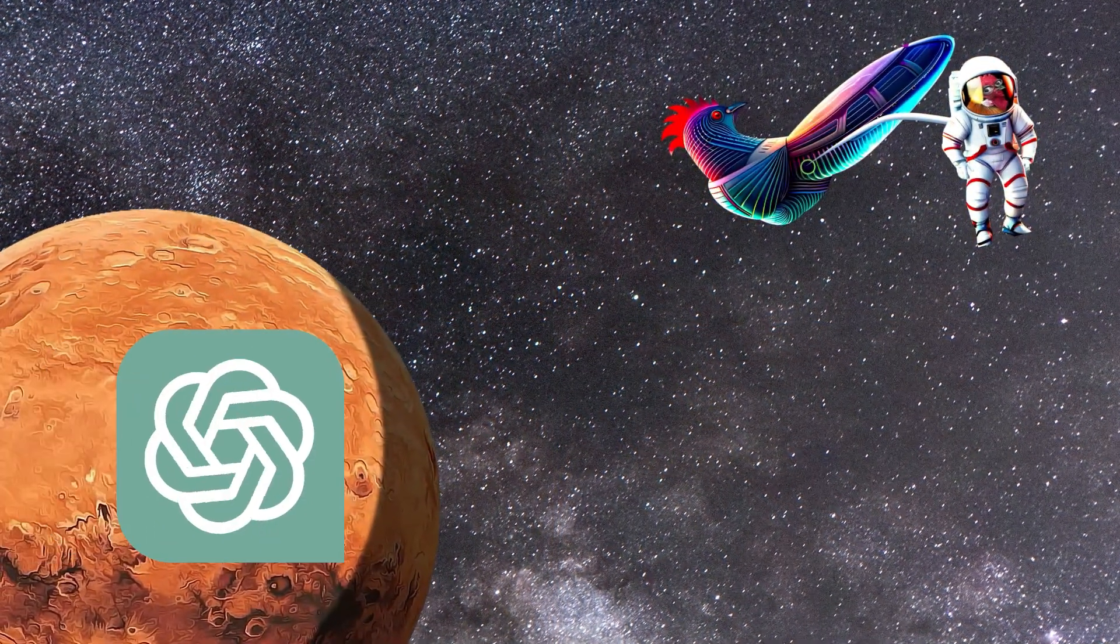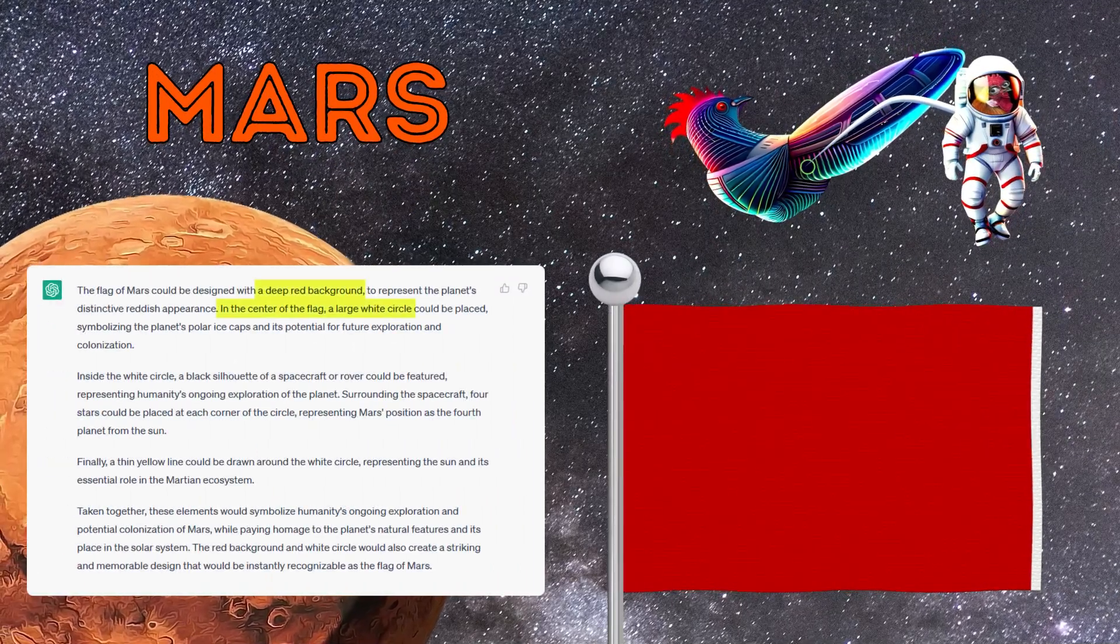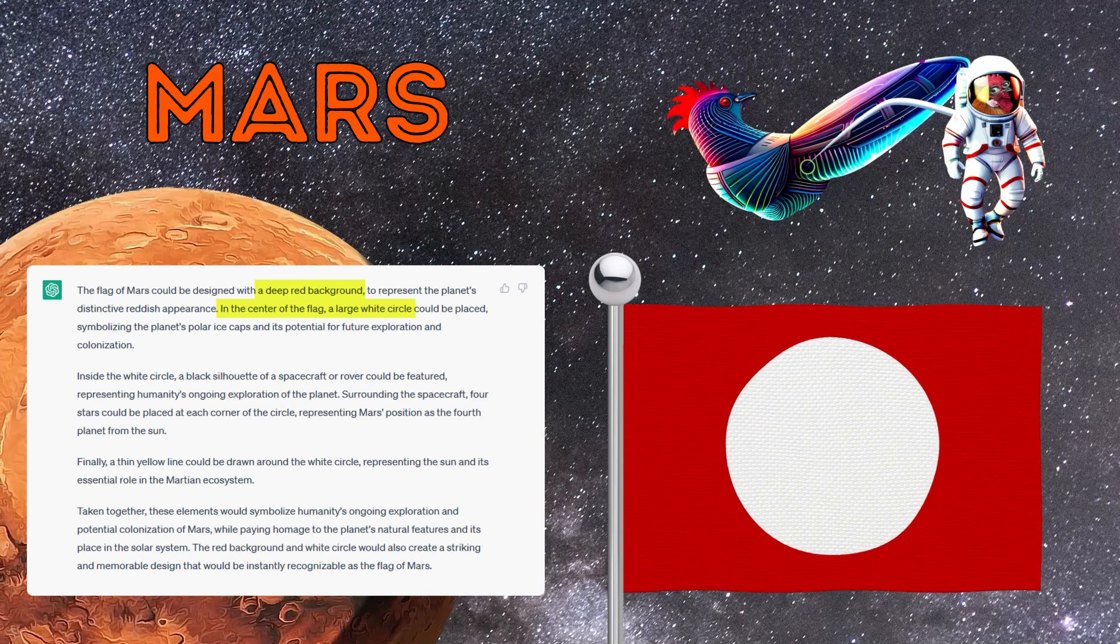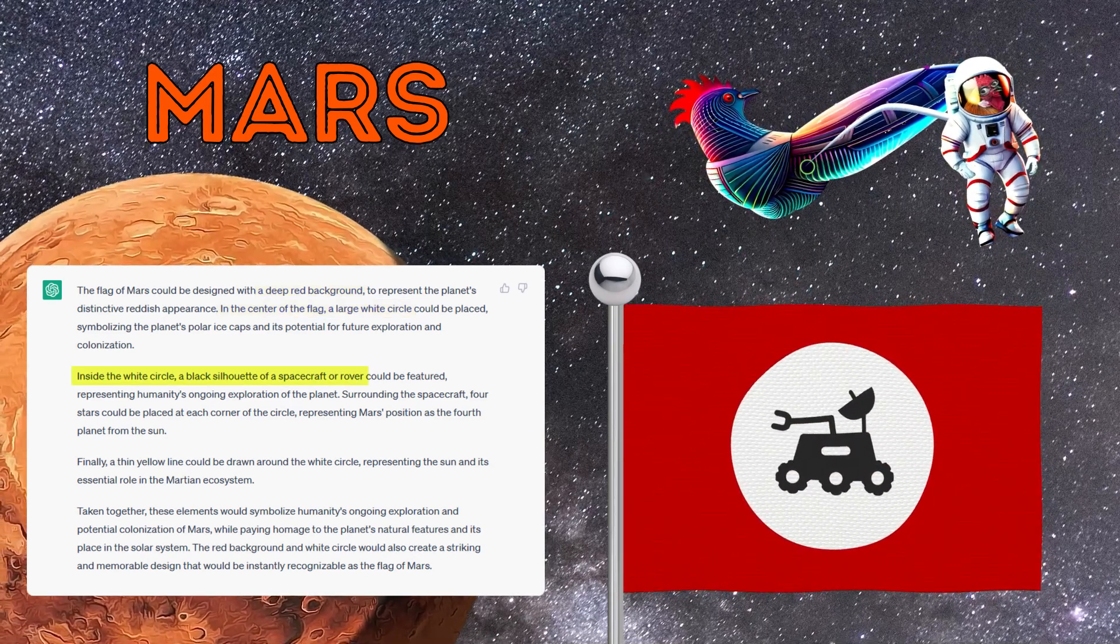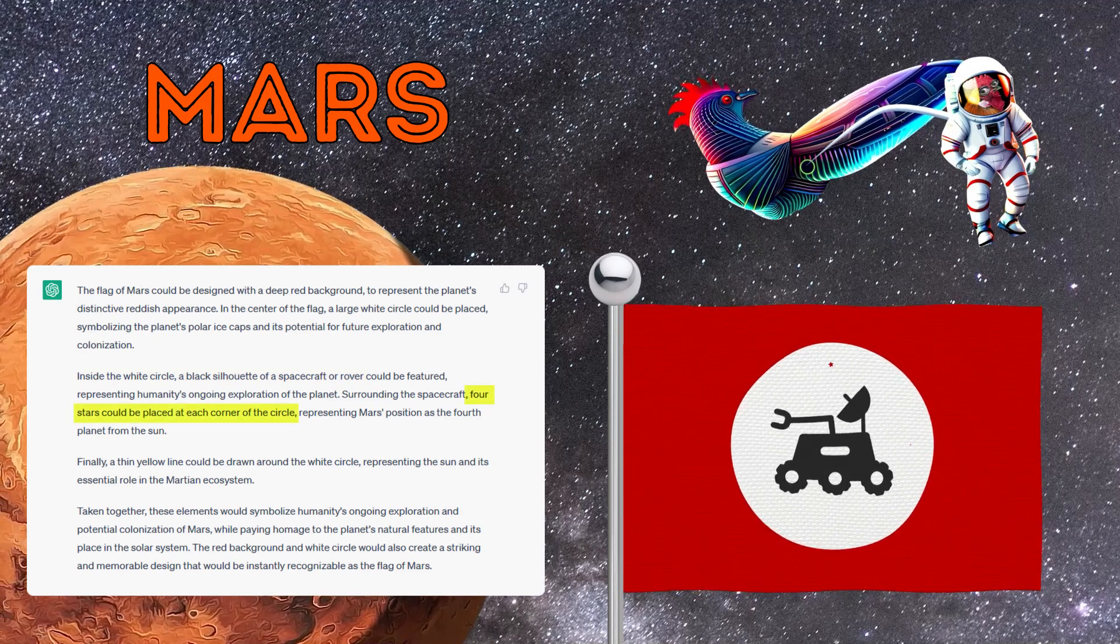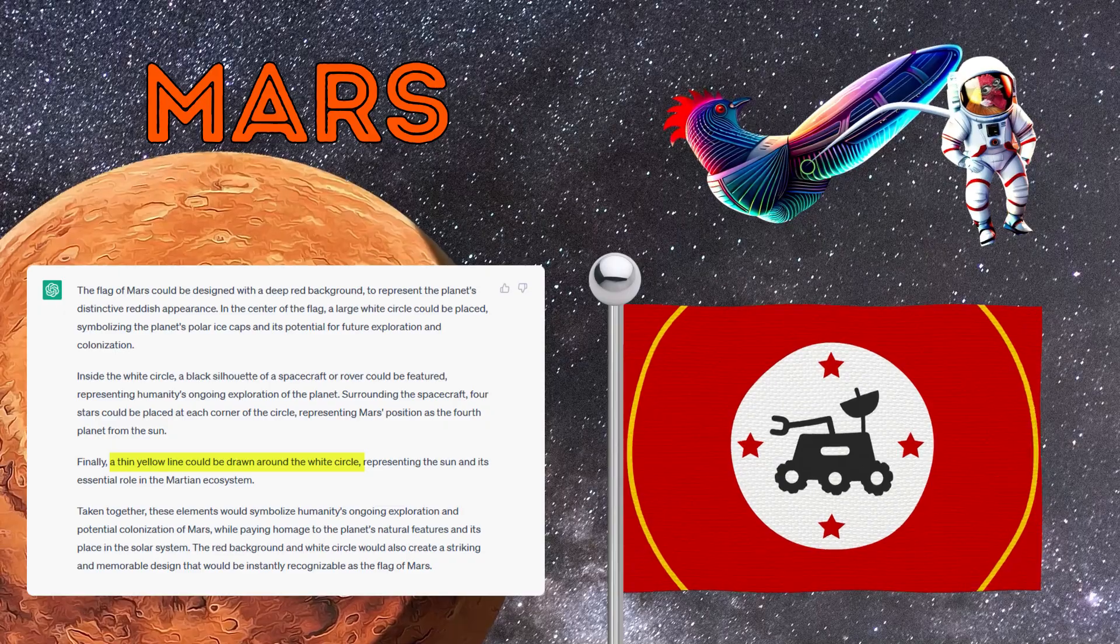What would the design of the Mars flag look like? On the deep red background, we will place a large white circle. In the circle, we will add a stylized black Mars rover. Around the rover, we will place four red stars. And around the white circle, we will draw a yellow line.